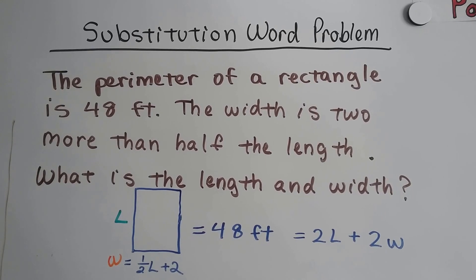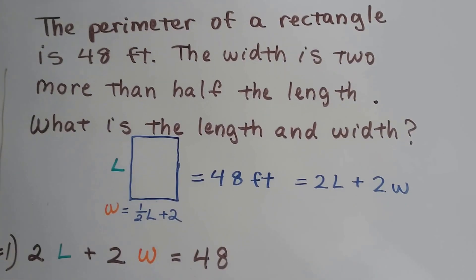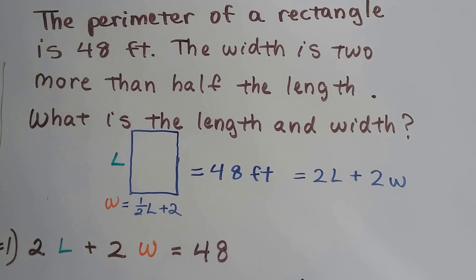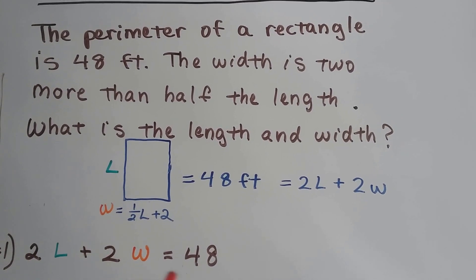So the information it gave us is that the perimeter is 48 feet. So we know that the perimeter is two lengths and two widths. That's 48.